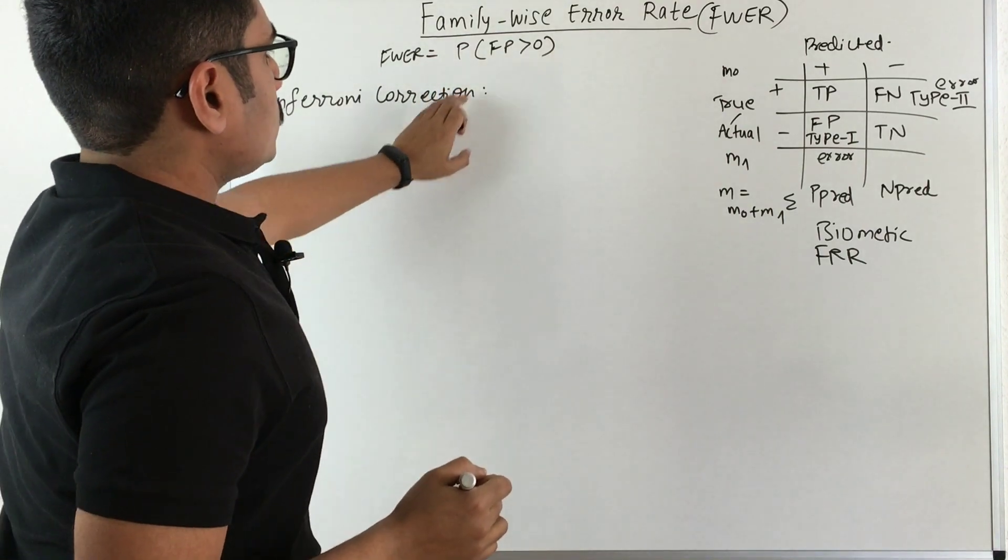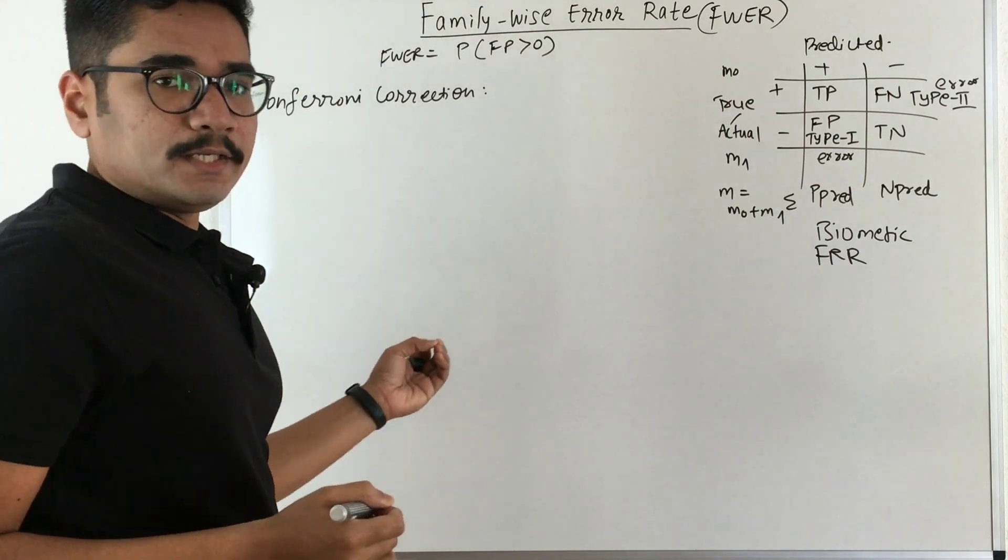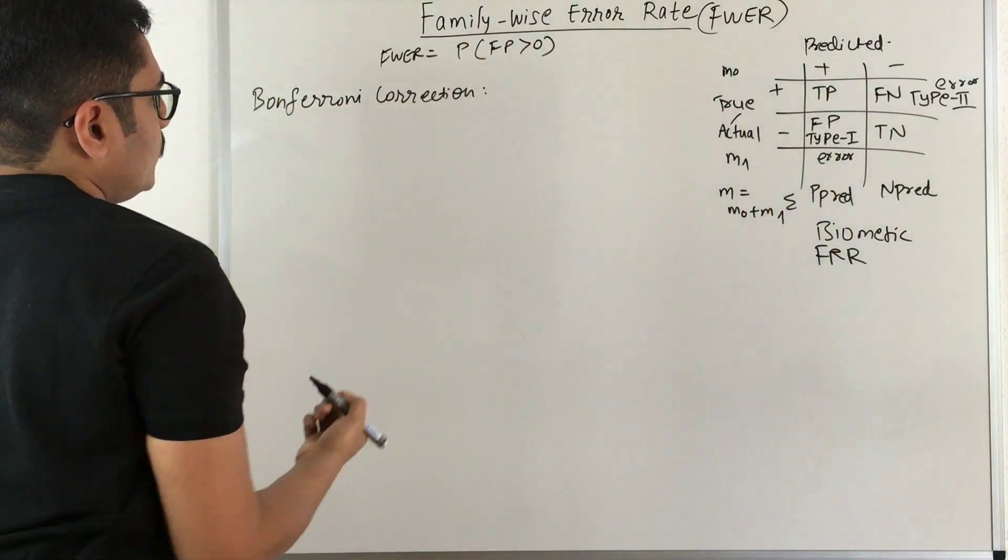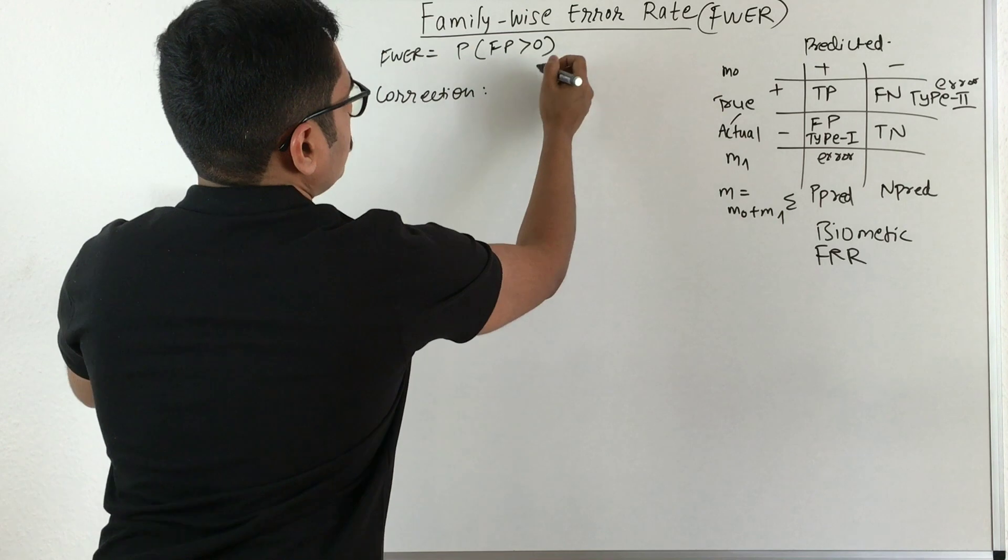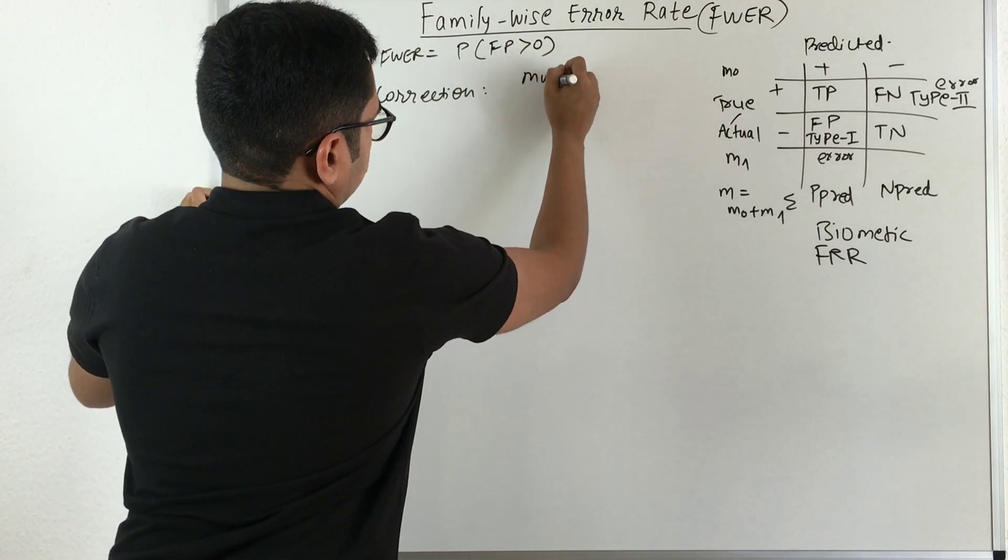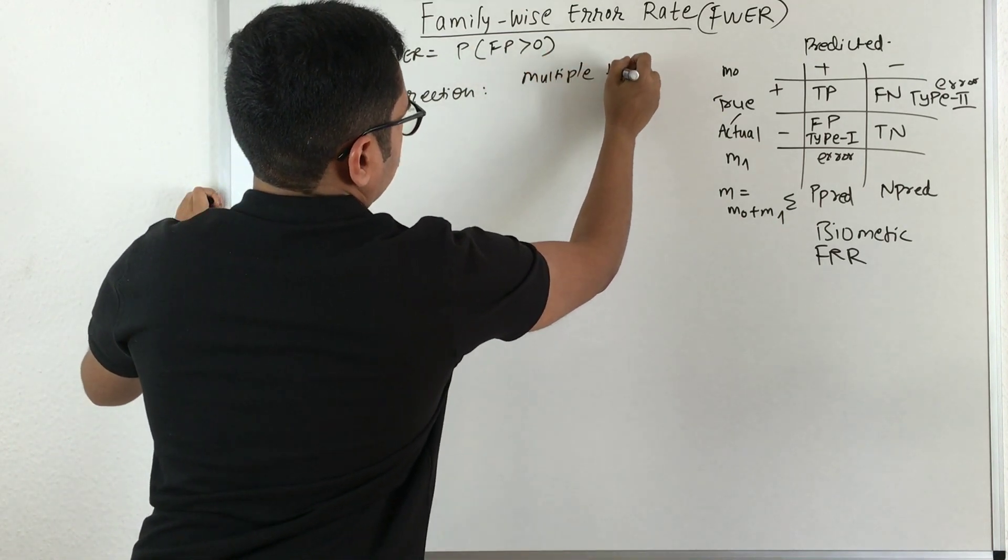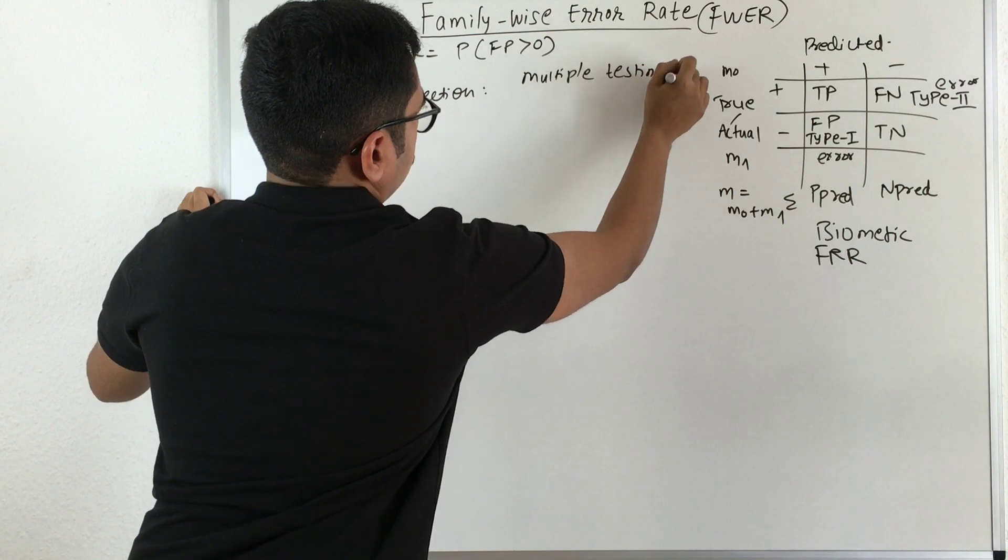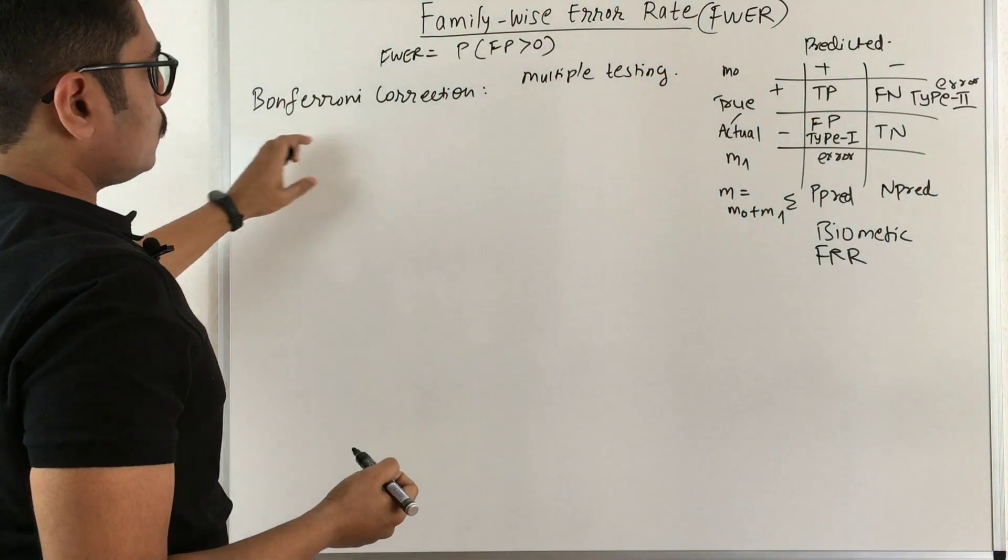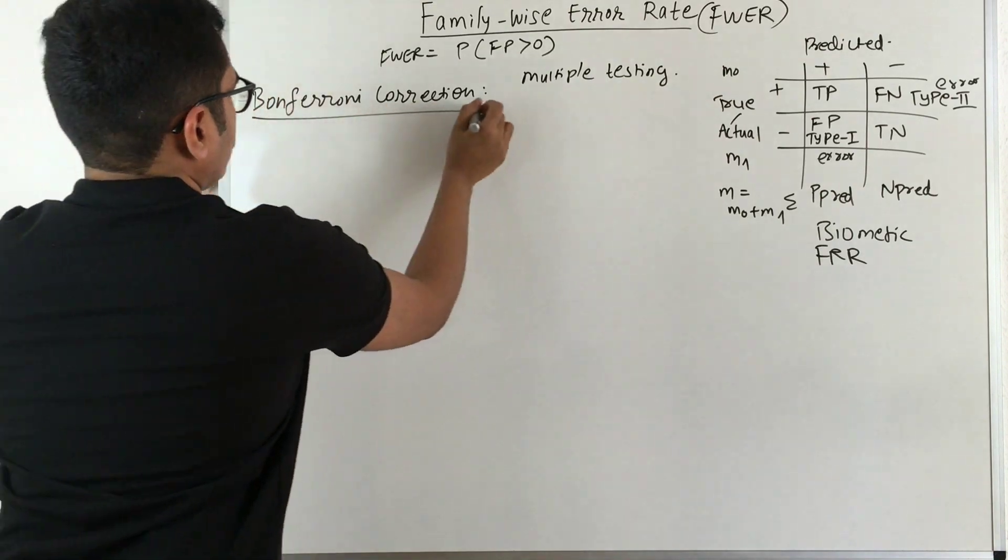So Bonferroni correction is essentially a correction which is applied to the p-values, that is the probability values. So this usually happens when you have done multiple testing. So this occurs as a result of multiple hypothesis testing. So there we need to apply this Bonferroni correction.